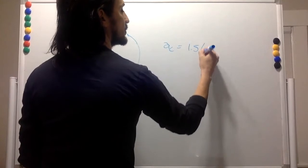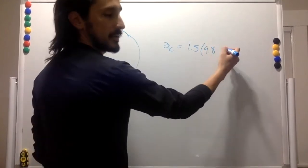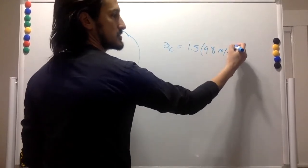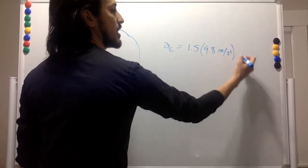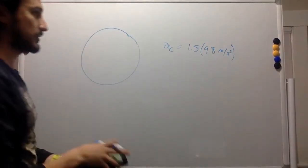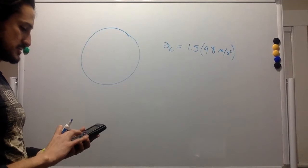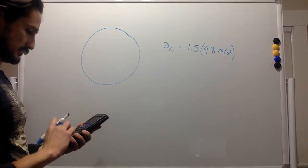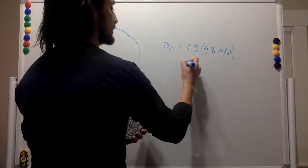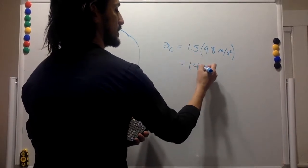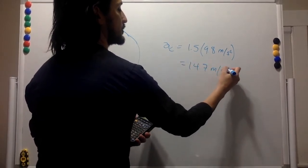So the centripetal acceleration is 1.5 times 9.8 meters per second squared, which equals 14.7 meters per second squared.